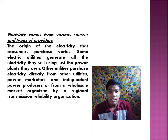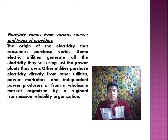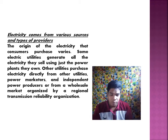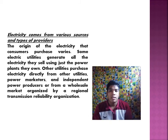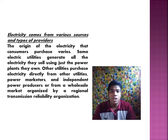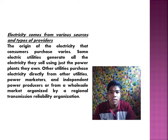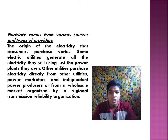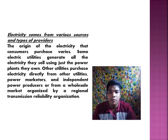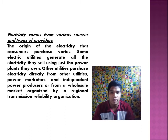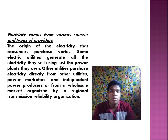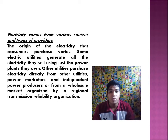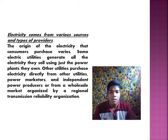Electricity comes from various sources and types of providers. The origin of the electricity that consumers purchase varies — some electric utilities generate all the electricity they sell using just the power plants they own. Other utilities purchase electricity directly from other utilities, power marketers, and independent power producers, or from a wholesale market organized by the regional transmission reliability organization.